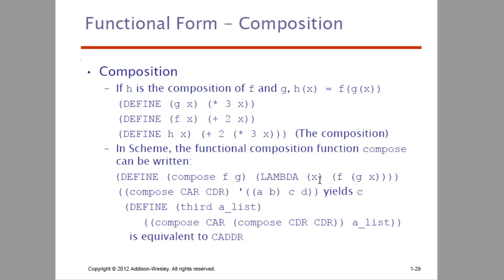We use the lambda expression x: F of G of x. For example, with the list a, b, cd — the third element is C. We are finding the third element of the list. Every time you can use CAR and CDR depending on what you need, as covered in previous classes. That is the same operation here.